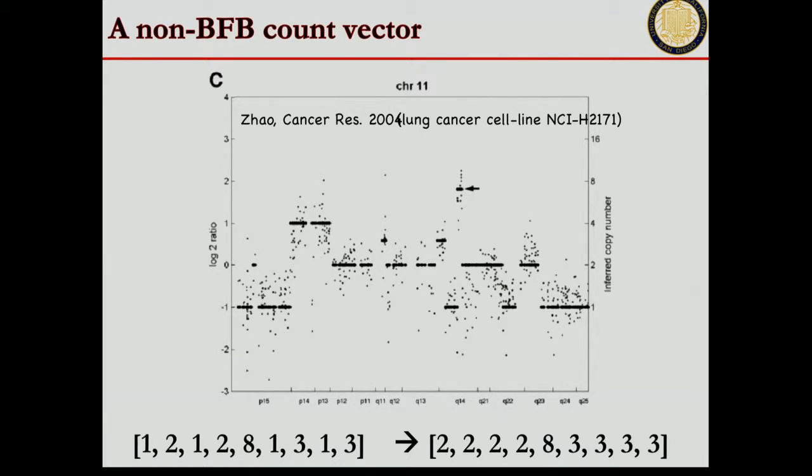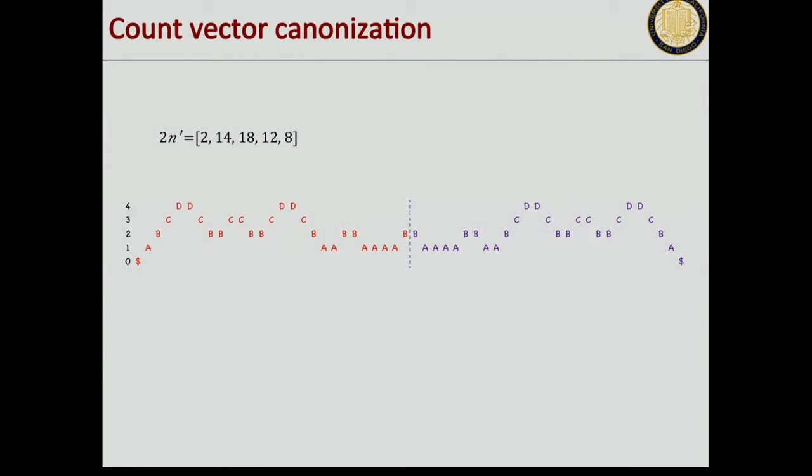You're given counts like this, and the algorithm can say it's BFB or not. We had to work harder to actually get the positive result. I'm going to go through a couple of slides to give you a sense of how that worked.